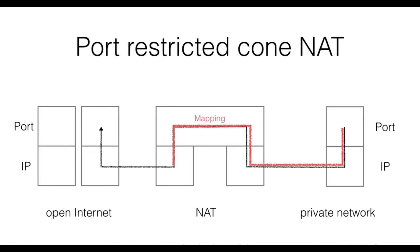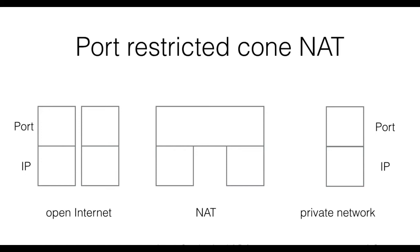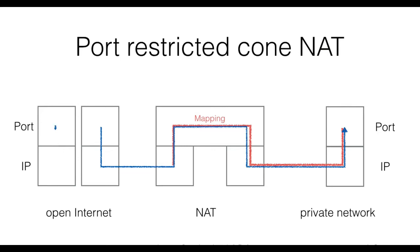If the NAT also restricts traffic to a previously contacted IP-port pair, then we talk about a port restricted cone NAT. Traffic from a previously contacted IP-port pair is allowed, but traffic from that same IP but from a different port is blocked, as is traffic from a different IP. It is important to notice that in this case the mapping between the private network IP-port and the external NAT IP-port will remain the same each time the internal IP-port is used to contact any destination on the open Internet. If the same private network IP-port is used to contact another host on the open Internet, this traffic will also be allowed using the same mapping.